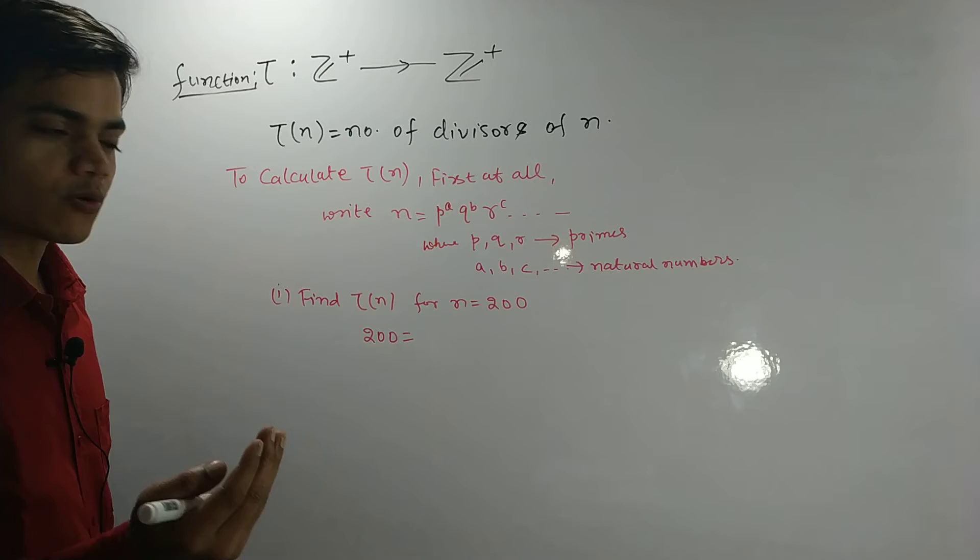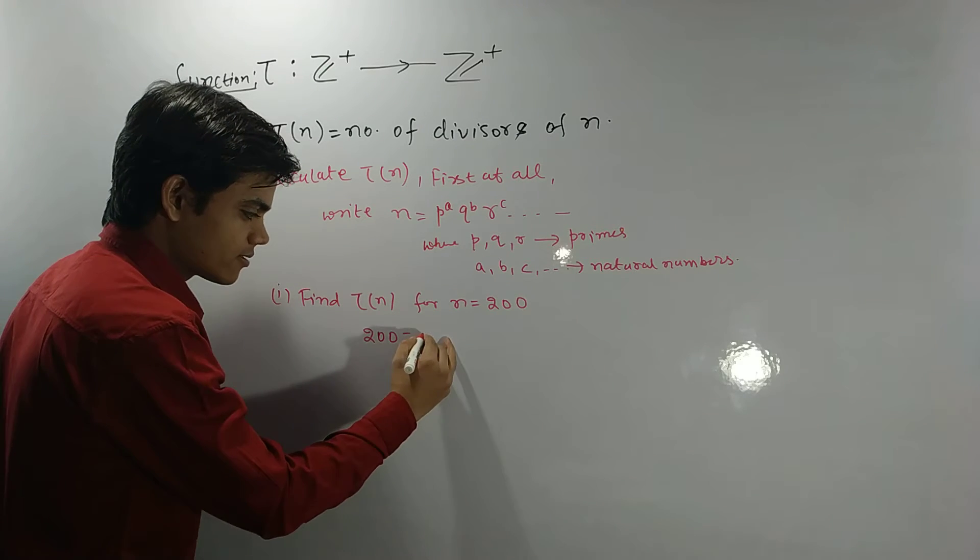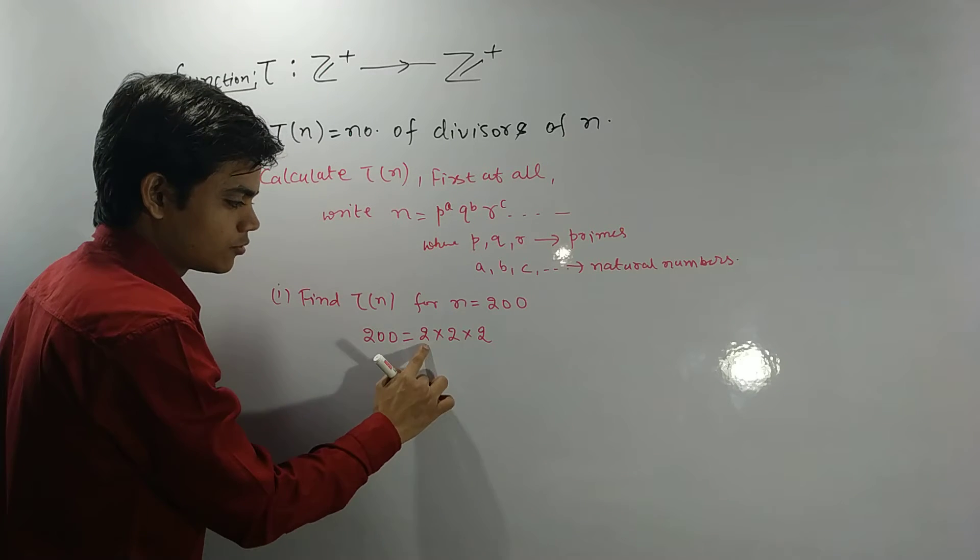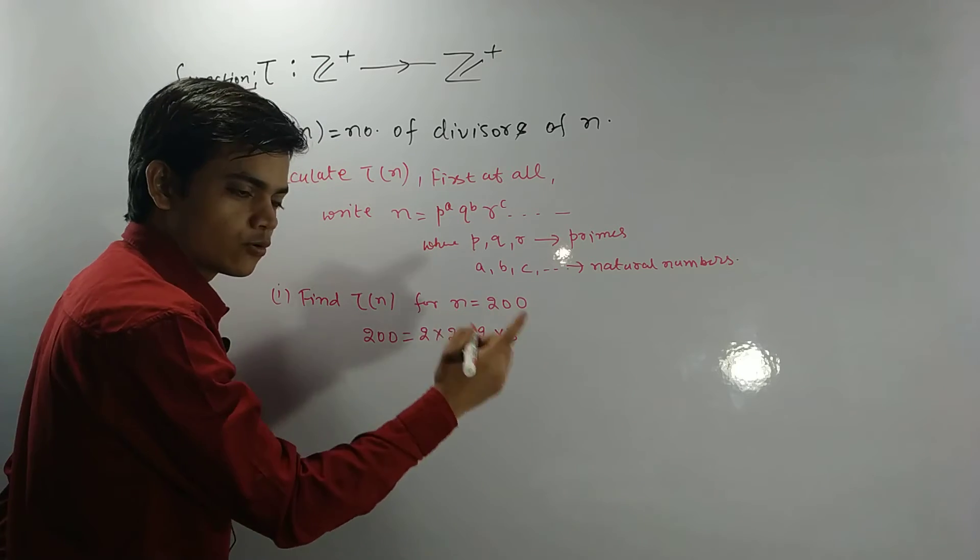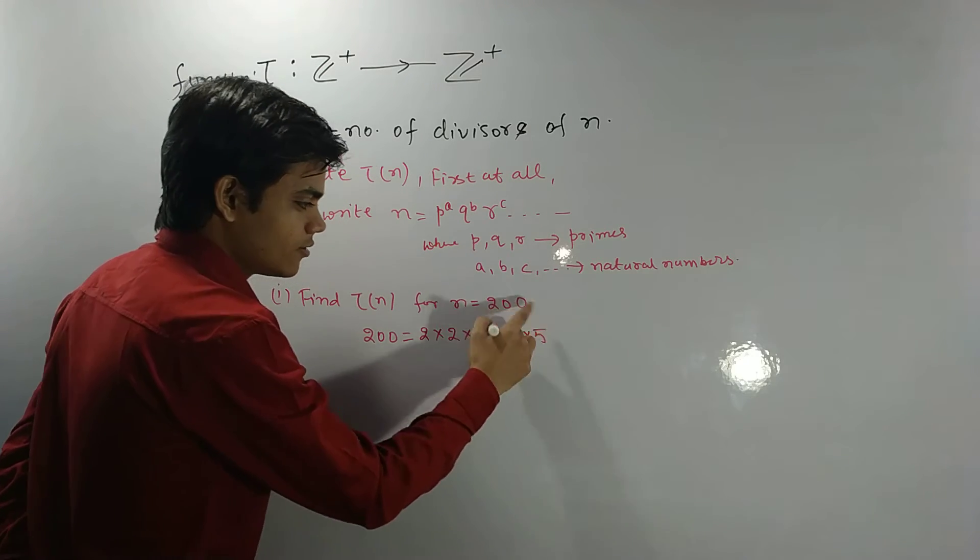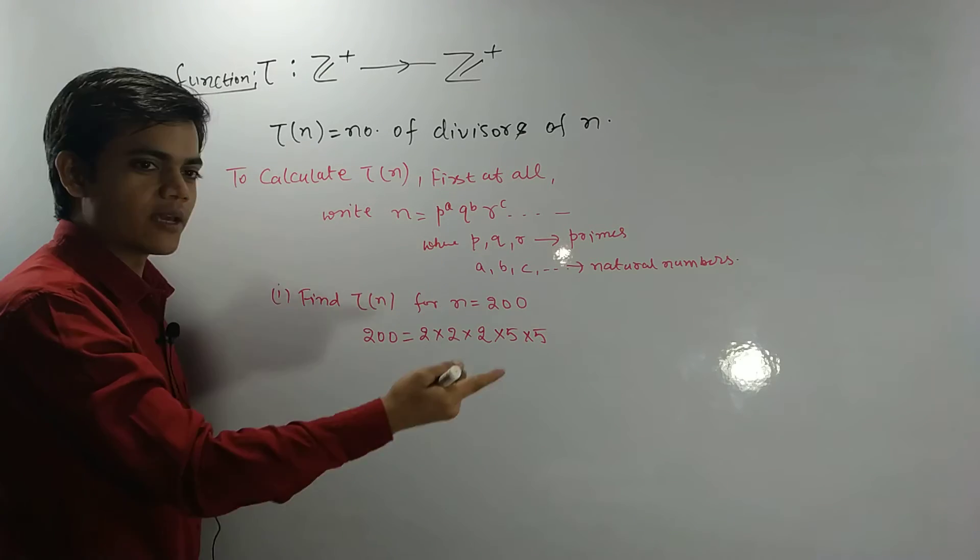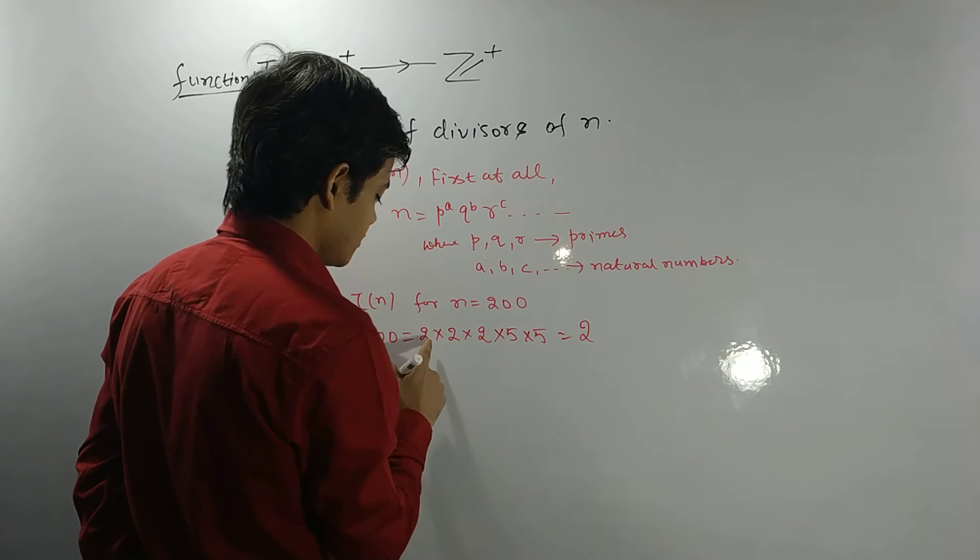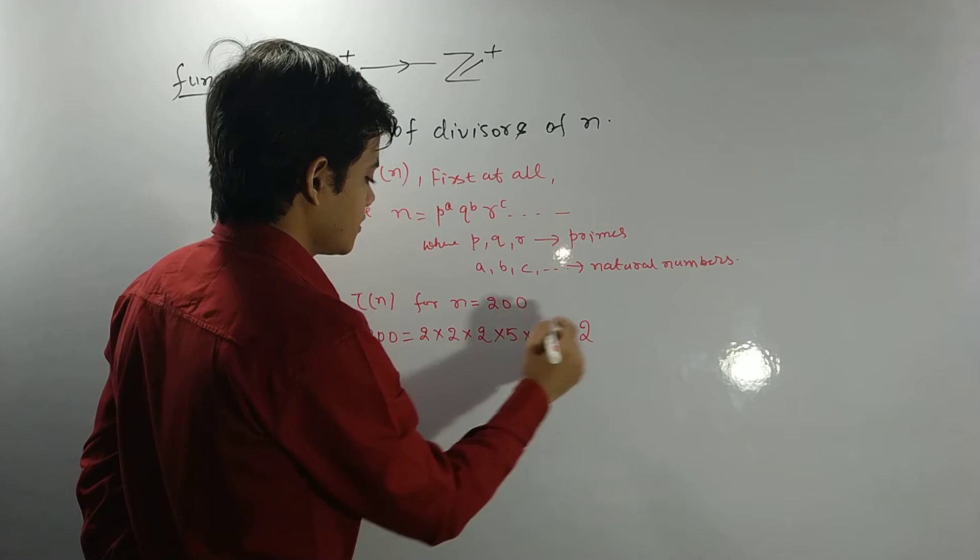For example, 200 can be factorized as 2 times 2 times 2... 2, 2, 2, 8 fives are 40, and 5s are 200. Okay, we have to take primes only, product of primes. So here you are getting what? What is this? What is this?